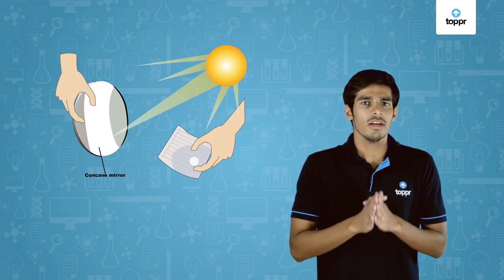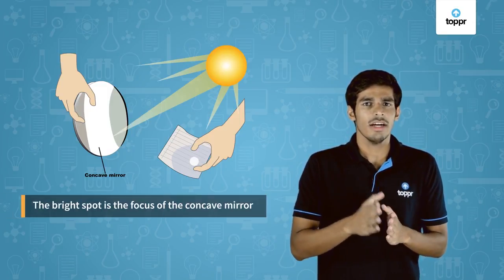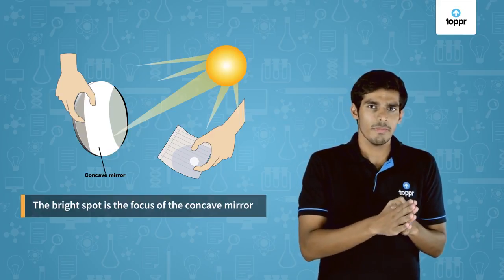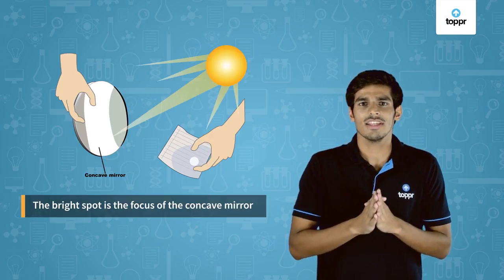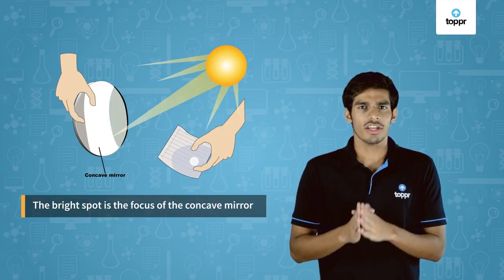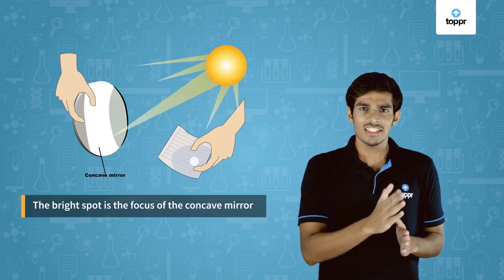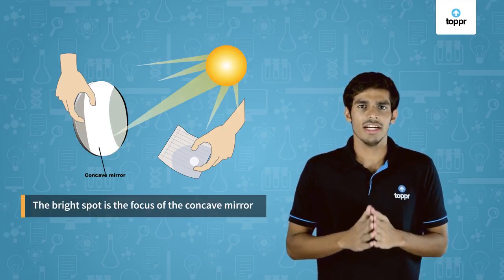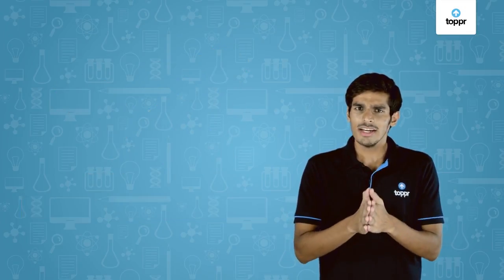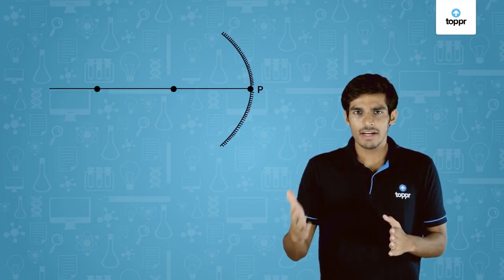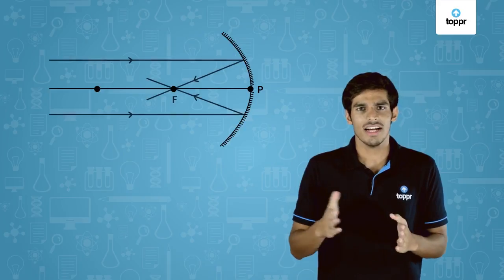The concave mirror converges a light from the sun and the bright spot we see on the paper is basically the image of the sun. This point is the focus of the concave mirror and the heat generated due to concentration of sunlight ignites the paper. Let us draw a ray diagram and get a better understanding of the outcome of this activity.